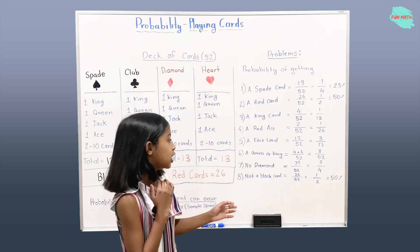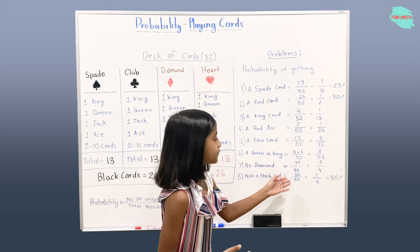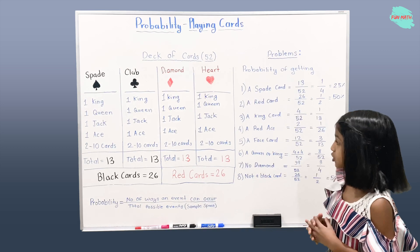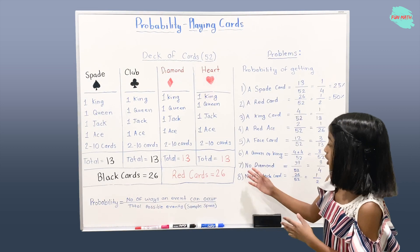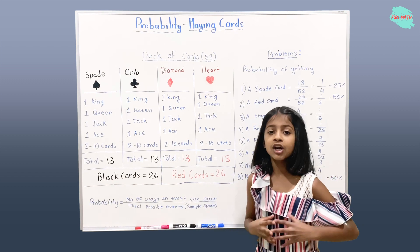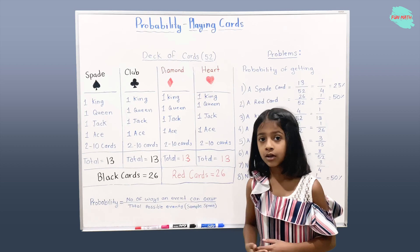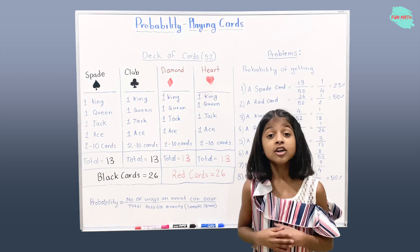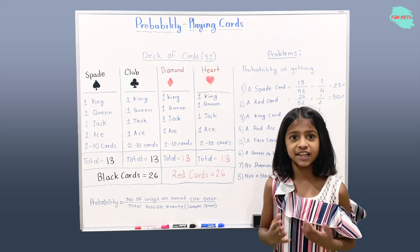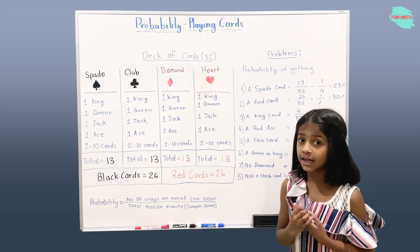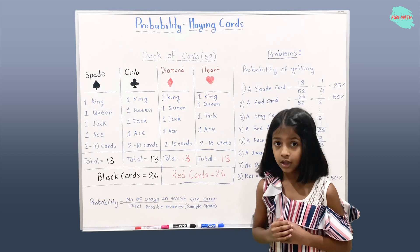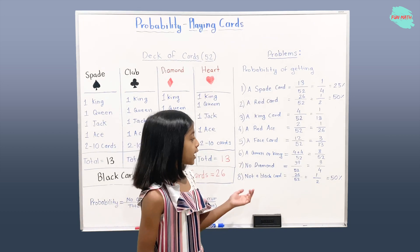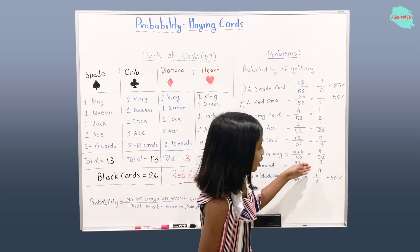Probability of getting no diamond is 39 over 52. We have 39 as our numerator because there are total 13 diamond cards, and we do not want any diamond cards. So we subtract 52 by 13 to get 39 — the remaining non-diamond cards. 39 over 52 can also be called 3 over 4.